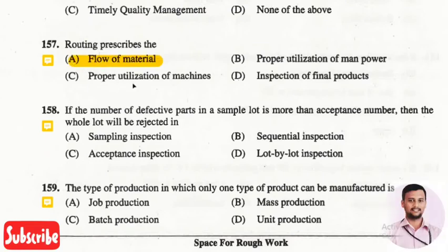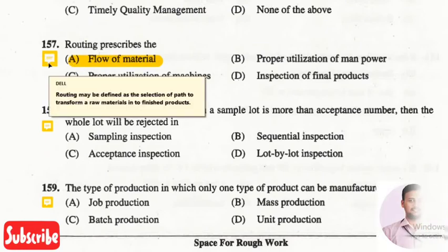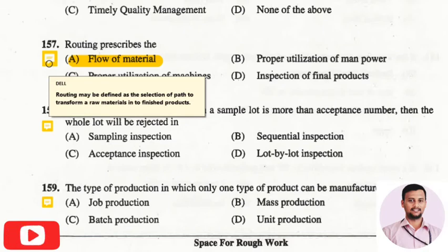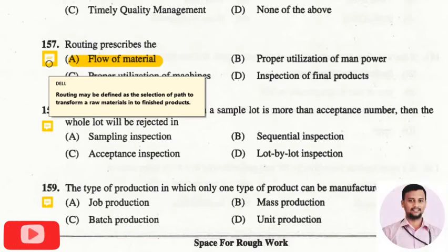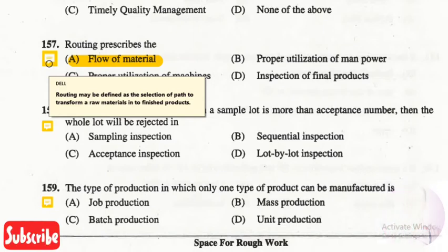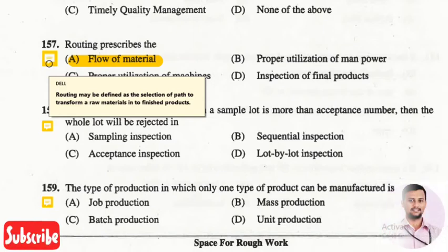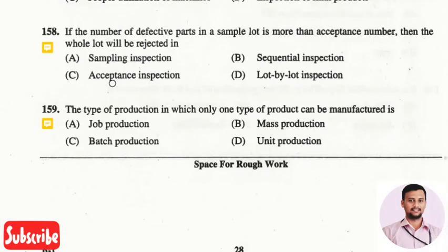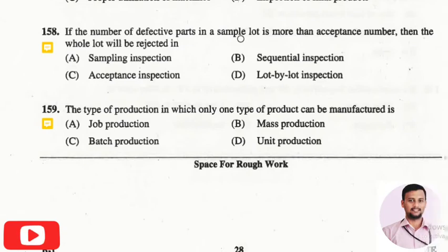The next question is: routing prescribes? The right answer is option one — the flow of material. Routing is defined as the selection of a path to transfer raw material into finished products. It is a flowchart describing how material is moved from one section to another until the end product is completed.